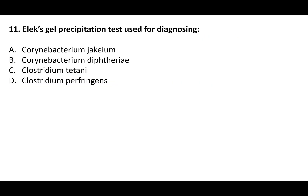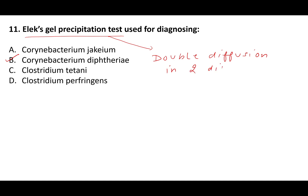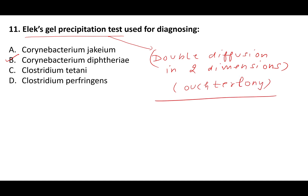The Elek gel precipitation test is used for Corynebacterium diphtheriae. Remember: this test is a double diffusion in two dimensions — also called the Ouchterlony technique, which is also double diffusion in two dimensions. It is a toxin-antitoxin reaction where both toxin and antitoxin move in different directions — hence two-dimensional double diffusion.